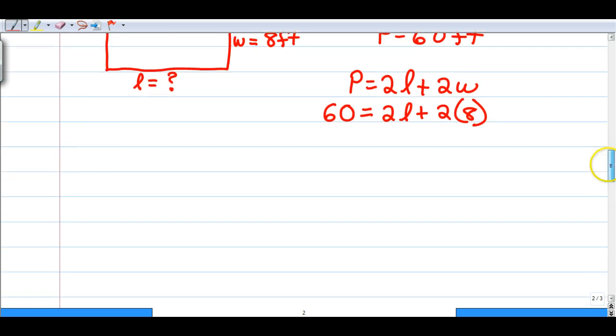Now we just have a problem with one unknown, L. So we're going to solve. Let's start by simplifying. We have 60 equals 2L plus 2 times 8 to create 16.